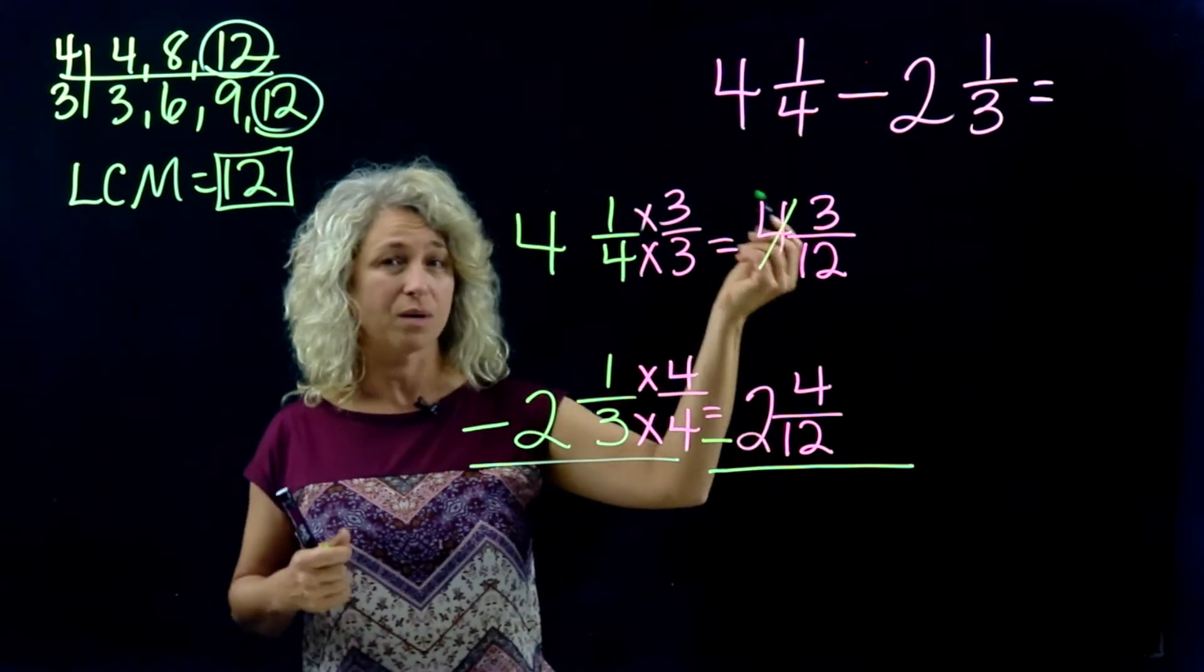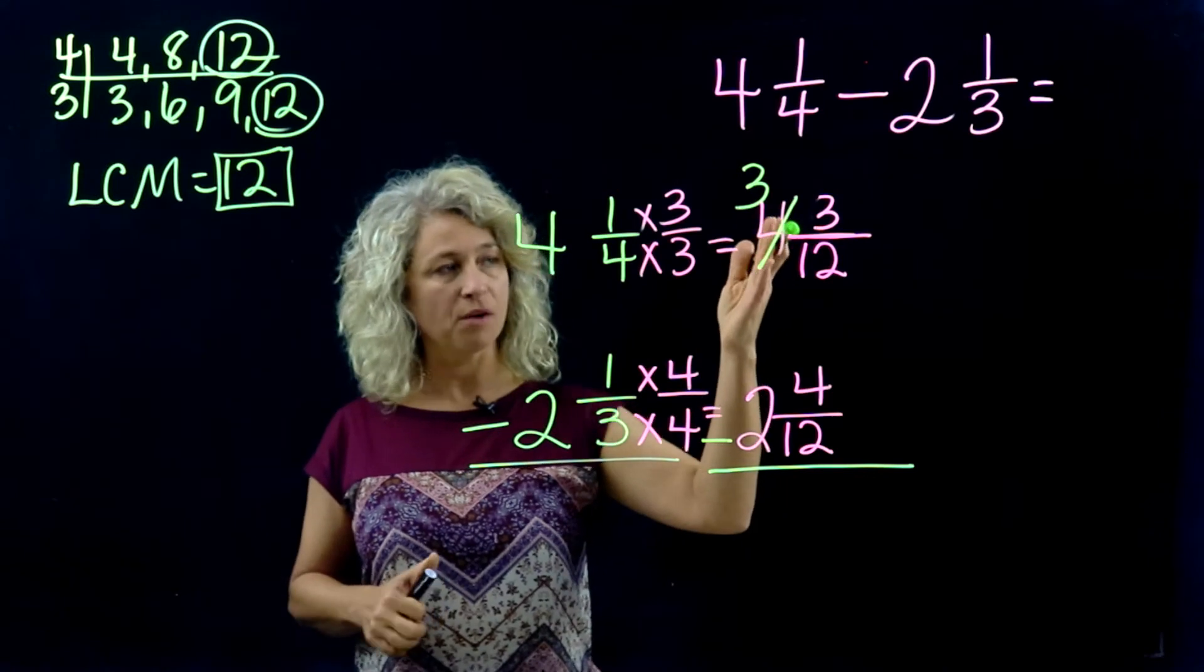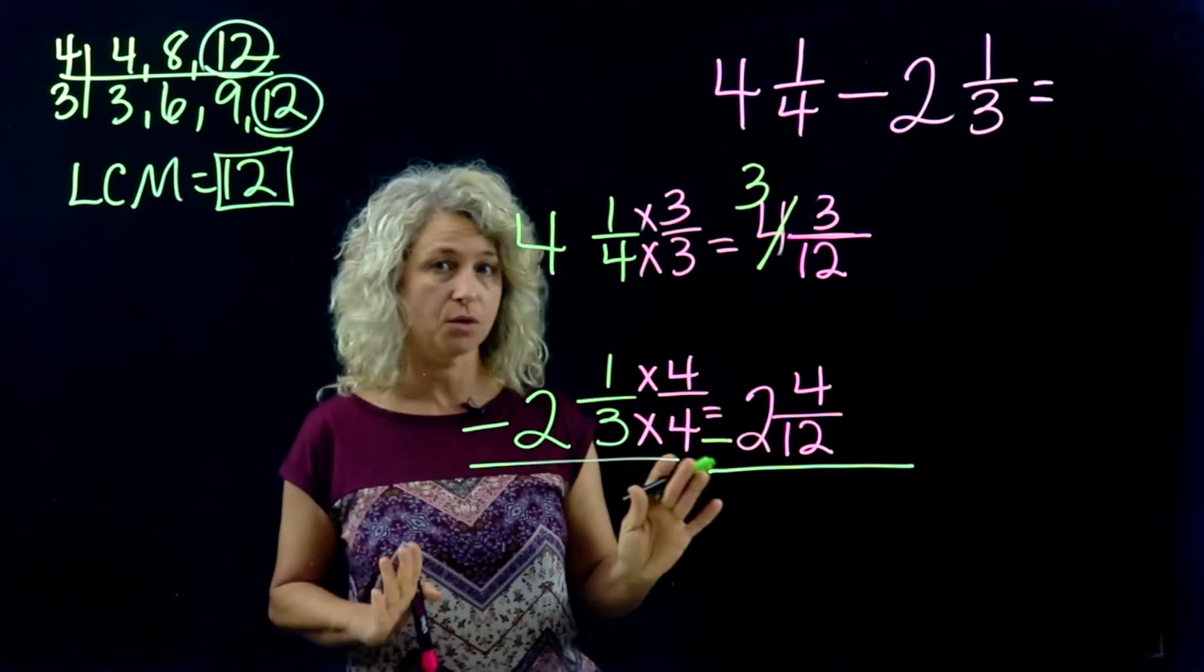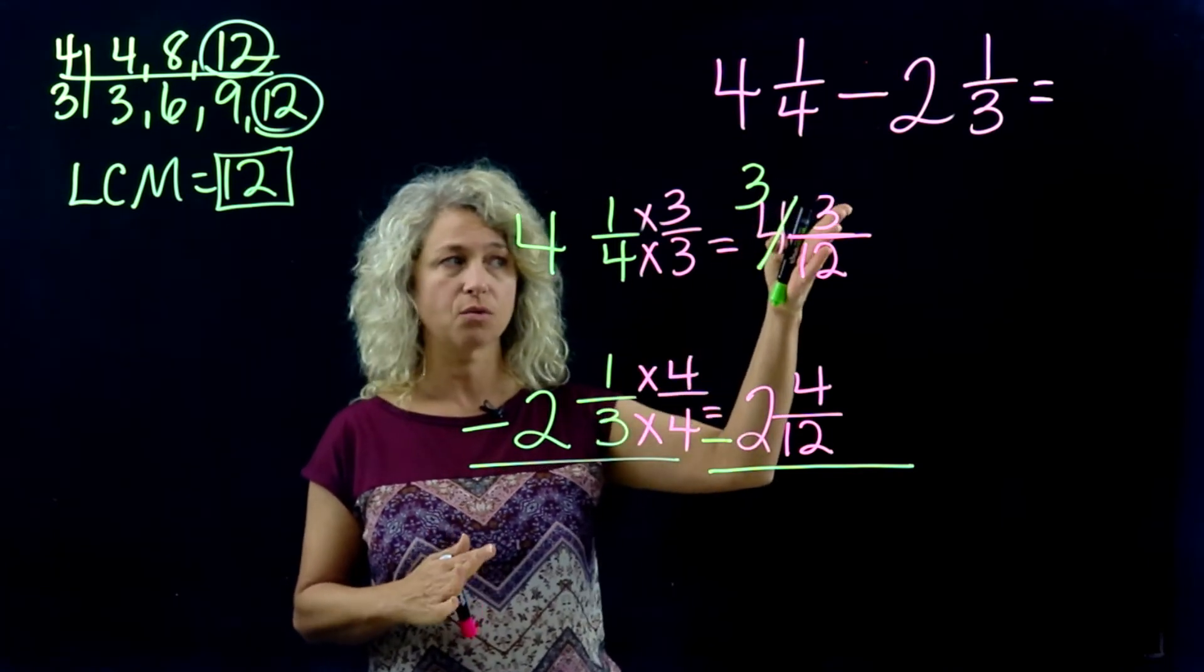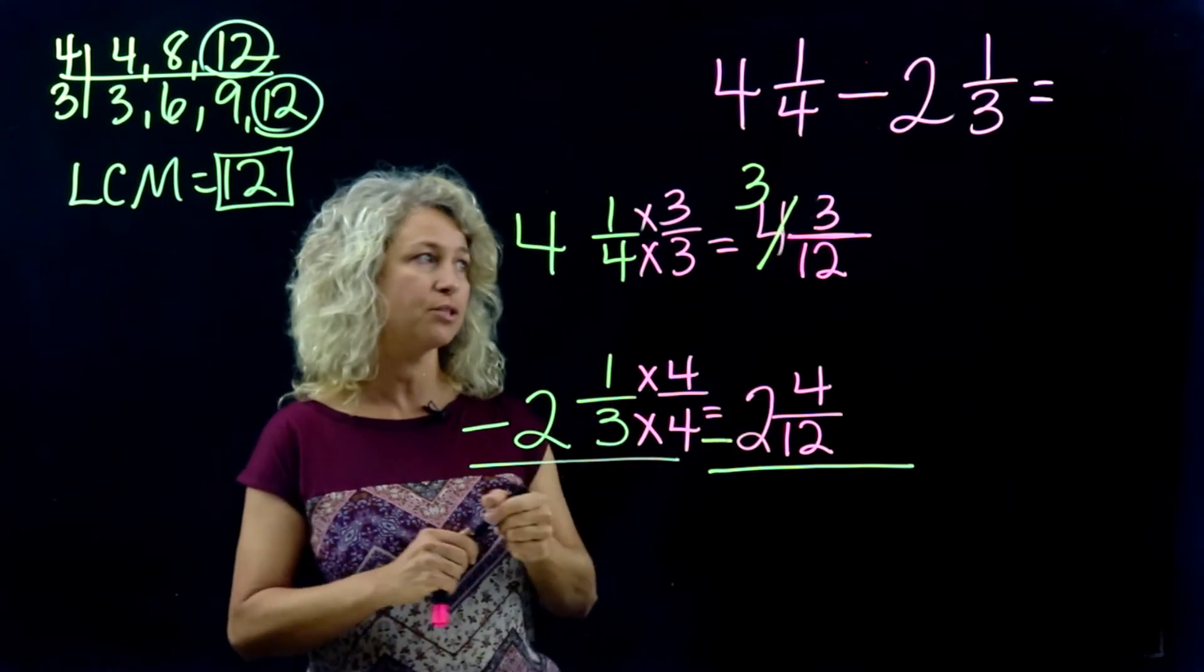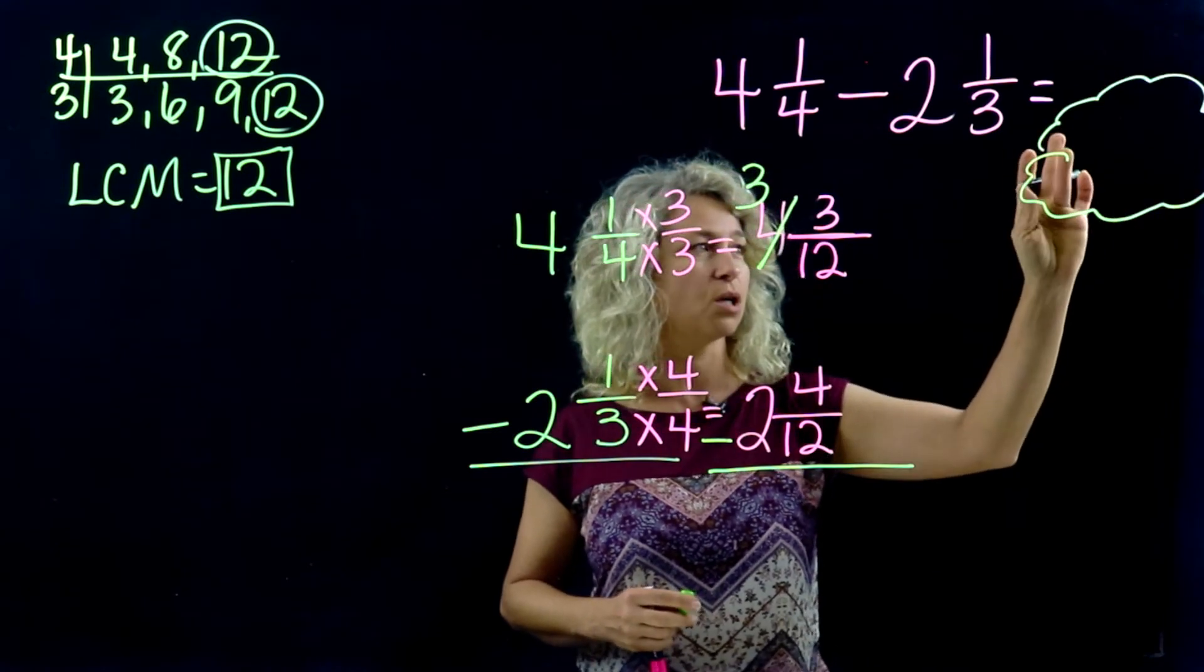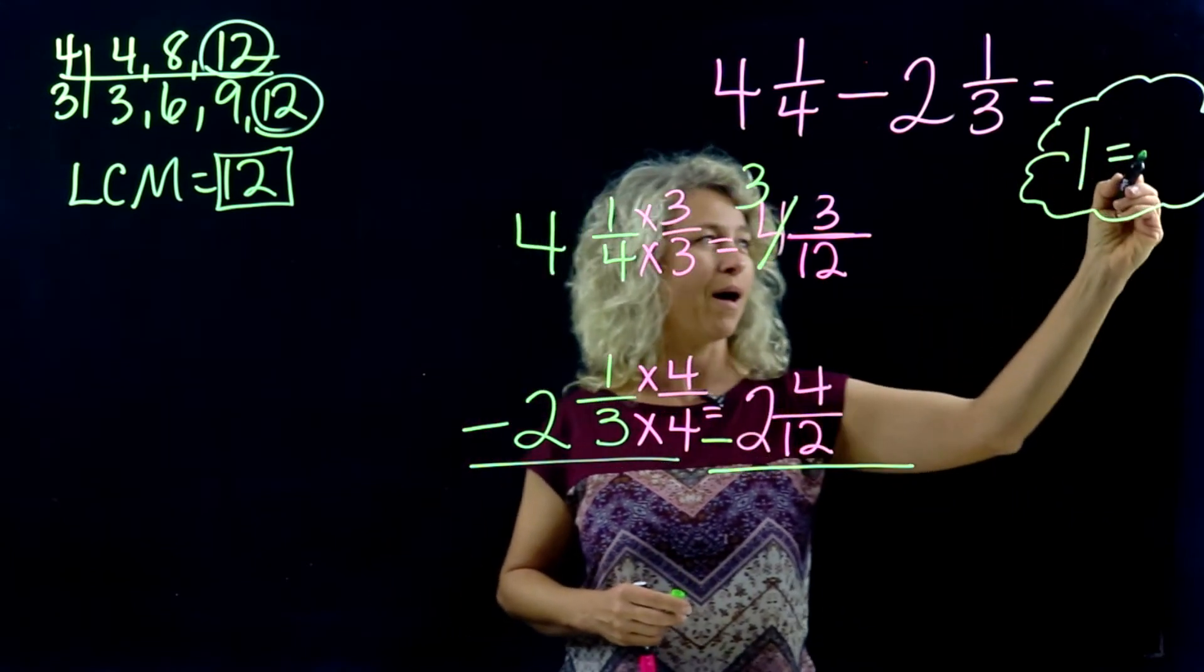We're going to take 1 away from the 4. The 4 becomes 1 less, which is a 3. When you take 1 away from the 4, the 4 becomes a 3. Because this is not regular subtraction with whole numbers, you can't just put a 1 in front of the 3. This does not become 13. You have to think in terms of—this is like a thinking bubble—think in terms of the whole number becoming a fraction.